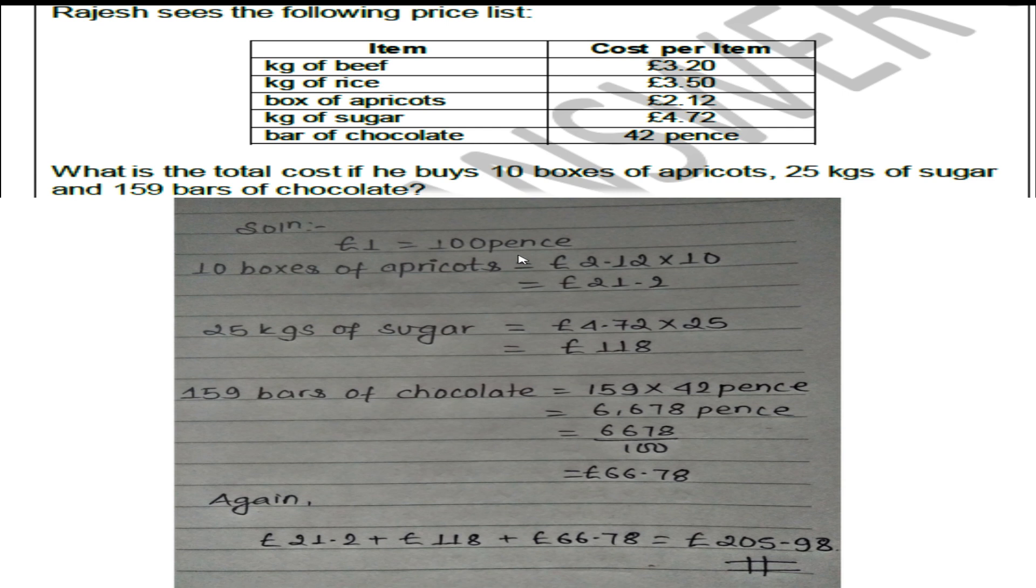Converting to pence: 6678 divided by 100 equals £66.78. Adding all together, the total is approximately £90.98. One pound equals 100 pence, so we need to be careful with the units when adding prices.